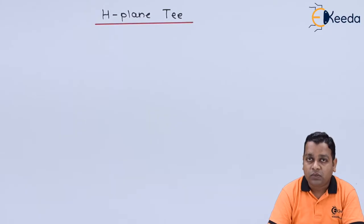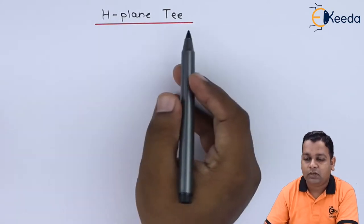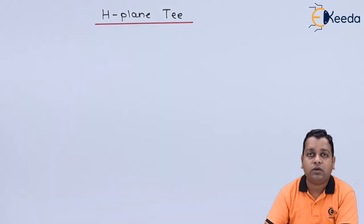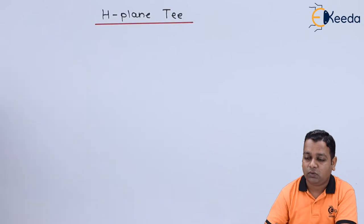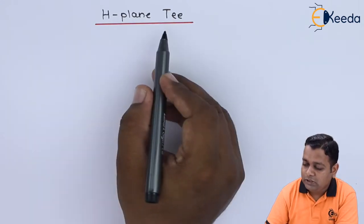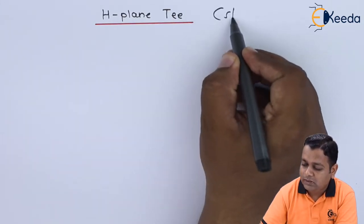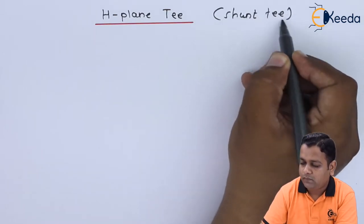We start with our topic H-plane T. As we have gone through the introduction and every detail of E-plane T, which is called as series junction or series T, the H-plane T is called as shunt T.